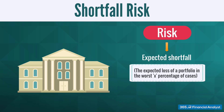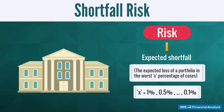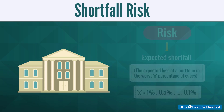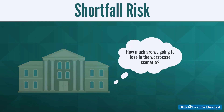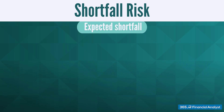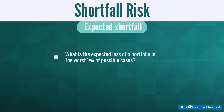In this definition, X can be 1%, 0.5%, or even 0.1%. The idea is to use expected shortfall as the worst-case scenario and possibly prepare for it. In this way, the expected shortfall can tell us what is the expected loss of a portfolio in the worst 1% of possible cases.